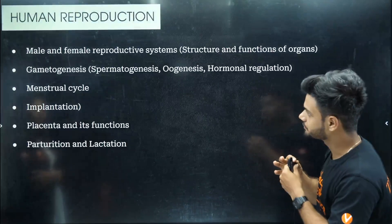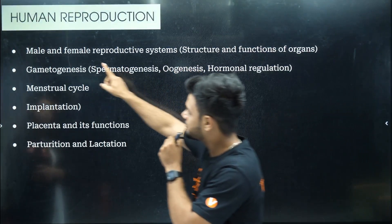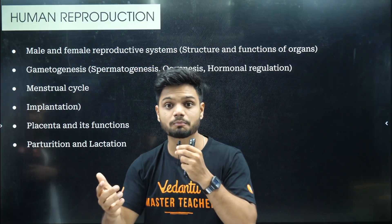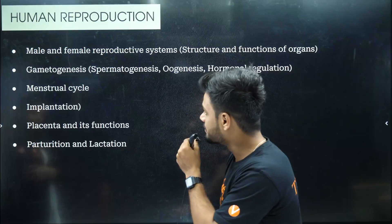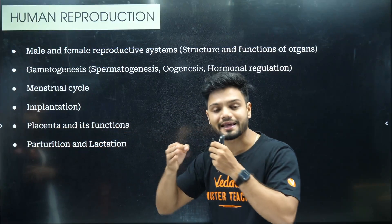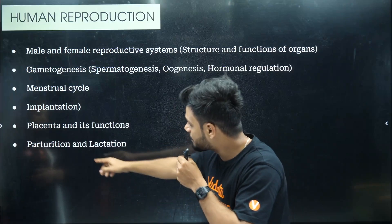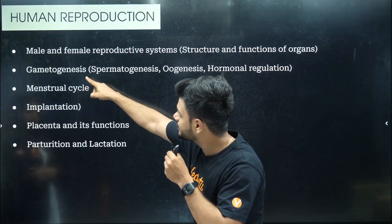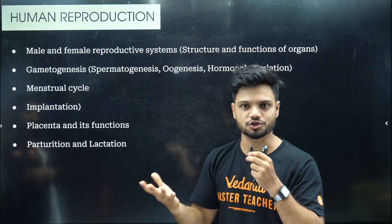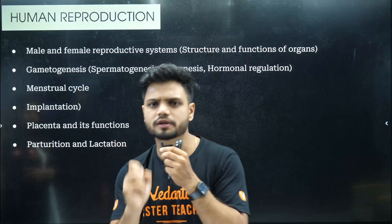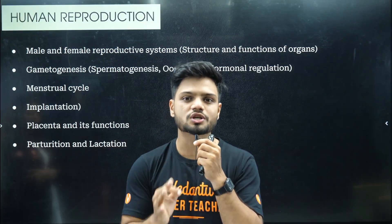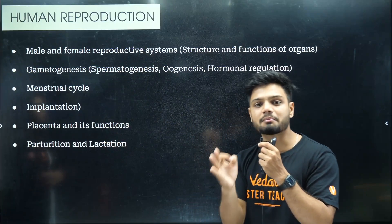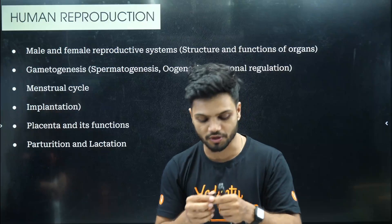Now, human reproduction — the entire male and female reproductive system in a diagram. The entire diagram will be drawn. Placenta's function is the exact three-mark or five-mark question. Then we have parturition and lactation — one-mark question. When you are trying to study this chapter, these topics will be 100% covered.